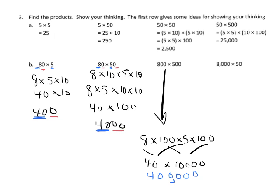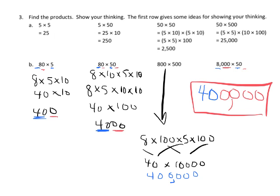And then, lastly, we've got 8,000 times 50. So we know that 8 times 5 is 40, and then we have these three zeros and this zero. So that means we're going to have four zeros. And so the answer is 400,000.